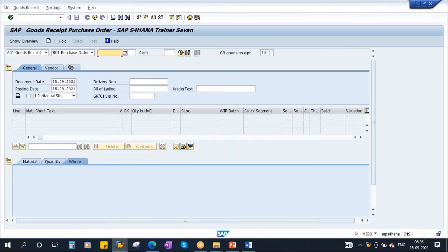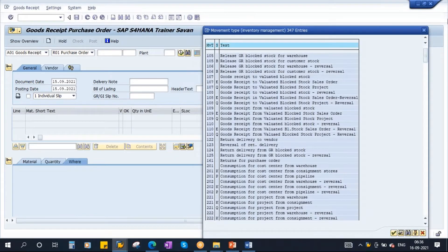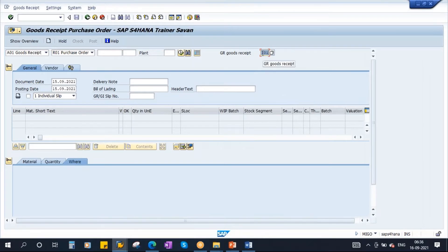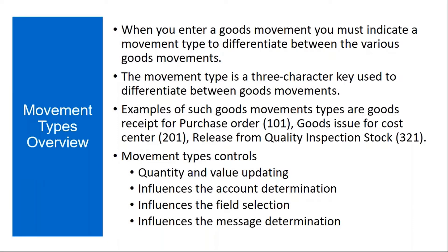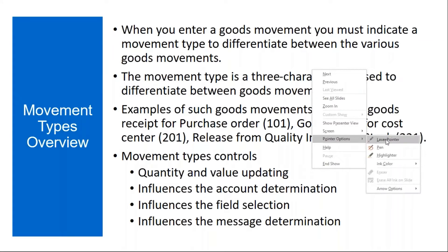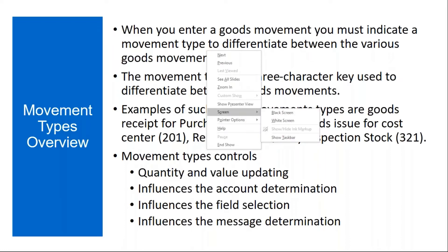In the MIGO transaction, there is a three-character field — that is the movement type. We have many movement types which we will discuss. Examples of goods movement types are: Good Receipt for purchase order — 101; Good Issue for cost center — 201; and Release from quality inspection stock — 321.